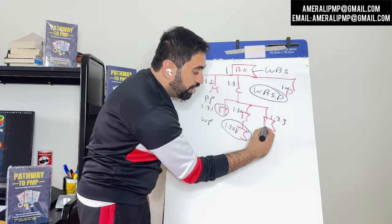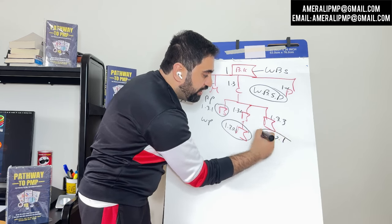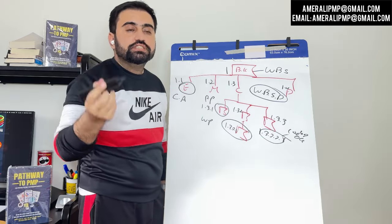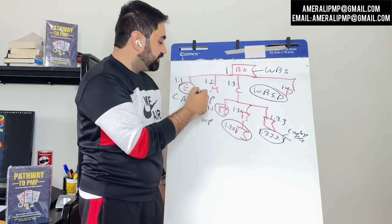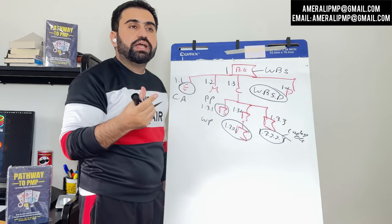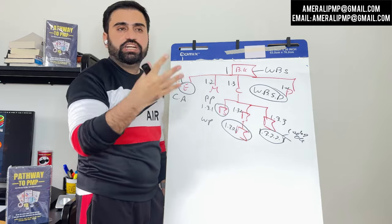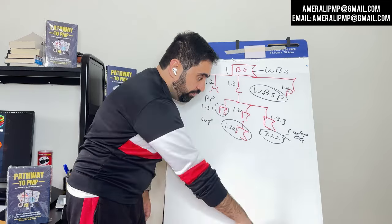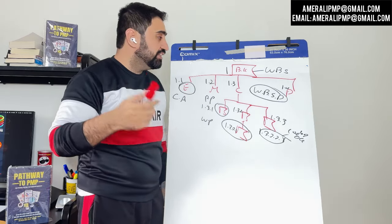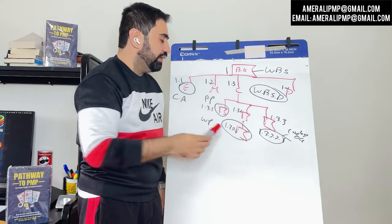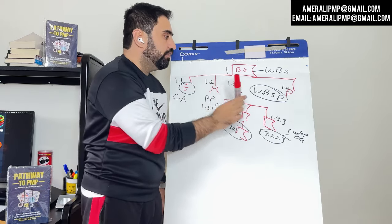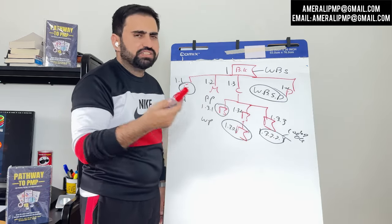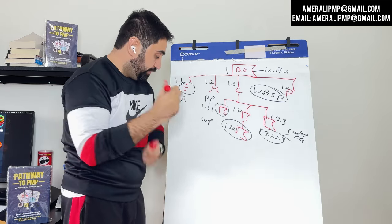Those numbers — like 1.3.2.2 — are known as the code of account. The WBS dictionary uses these codes. The lowest part, the work package, is the smallest unit you can work on. As a rule of thumb, a work package should be minimum 8 hours and maximum 80 hours. The control account is what management is more concerned with — they want to know about mechanical work, civil work, and plumbing work at that level. The planning package is used by the planning team, while work packages are used by the execution team.